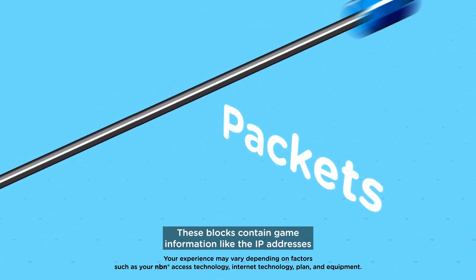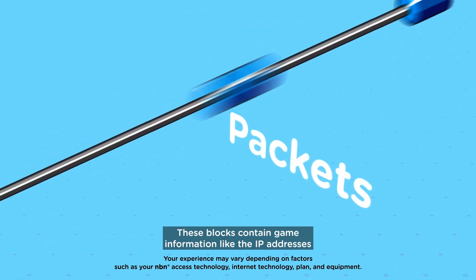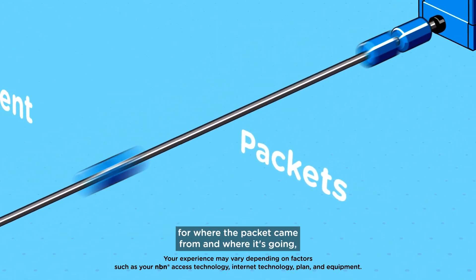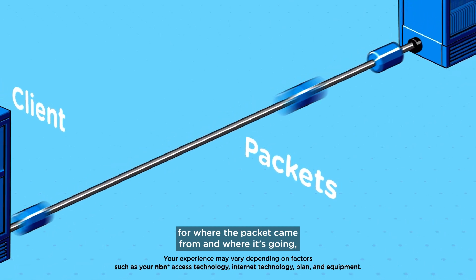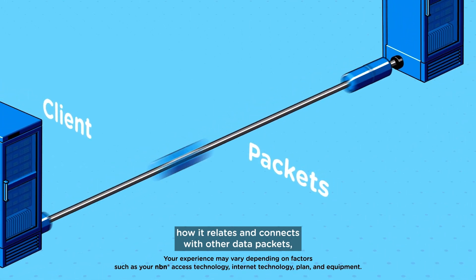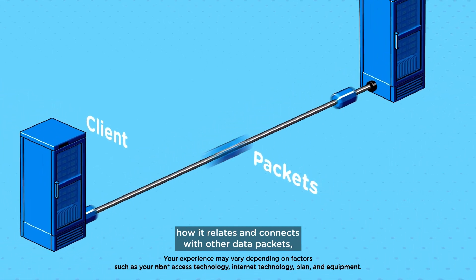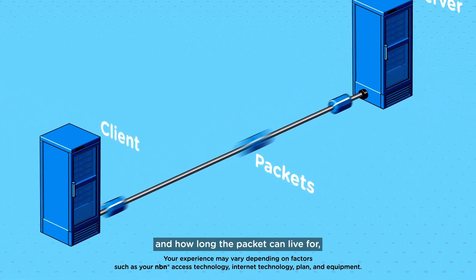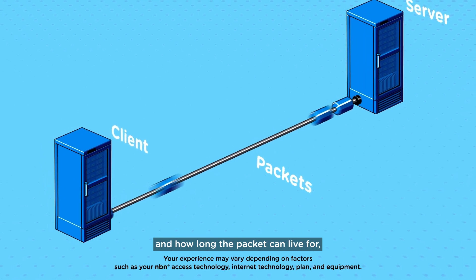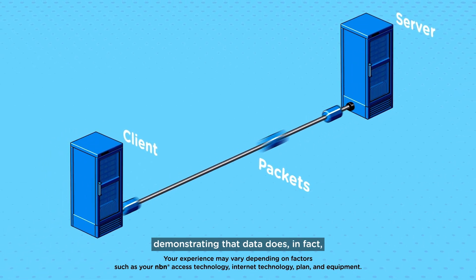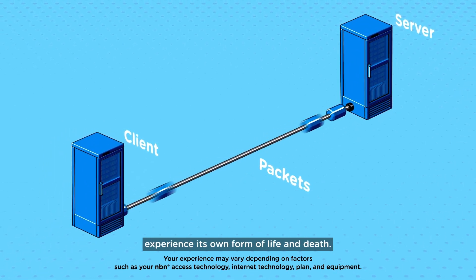These blocks contain game information, like the IP addresses for where the packet came from and where it's going, how it relates and connects with other data packets, and how long the packet can live for — demonstrating that data does in fact experience its own form of life and death.